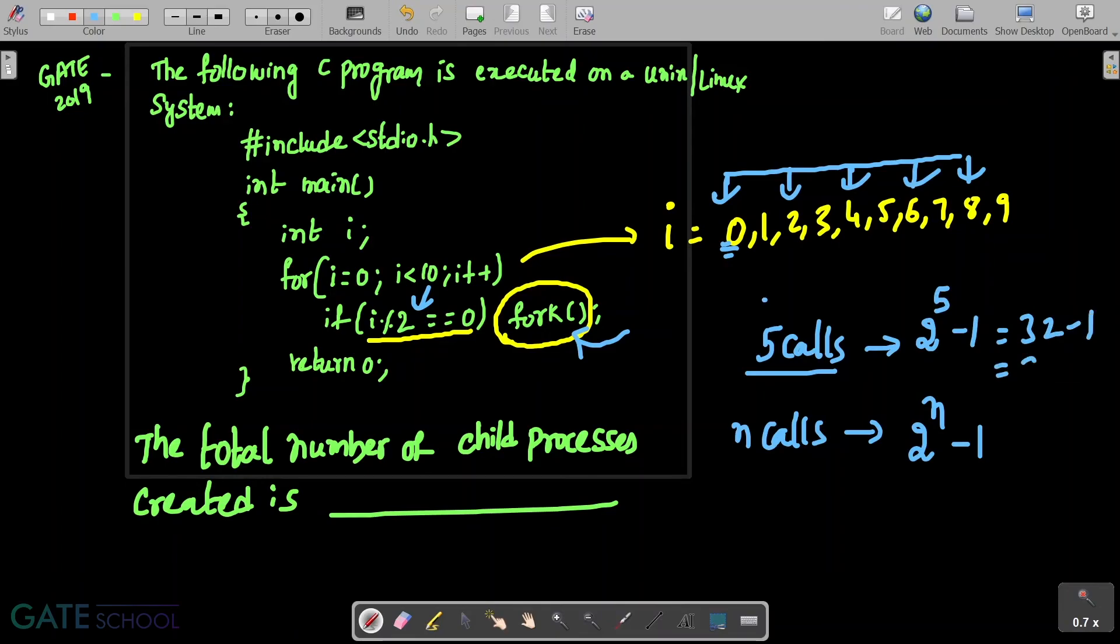Applying this formula, it will be 2^5 - 1, which is going to be 32 - 1, this is 31. So total number of child processes created is equal to 31.